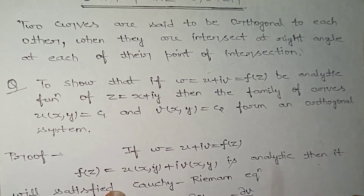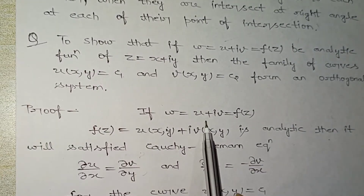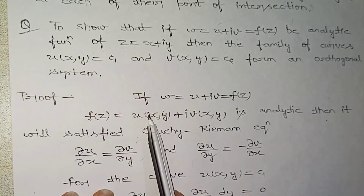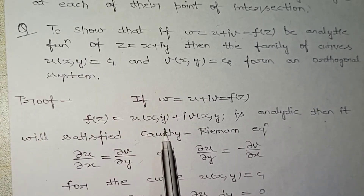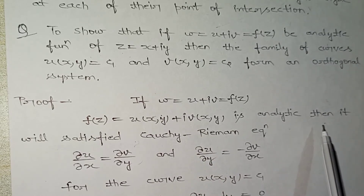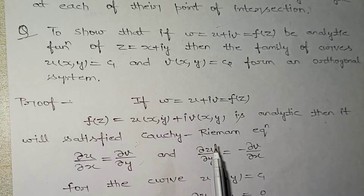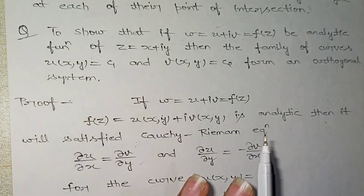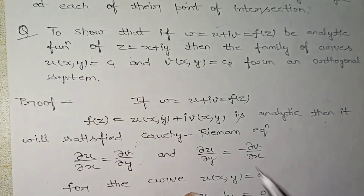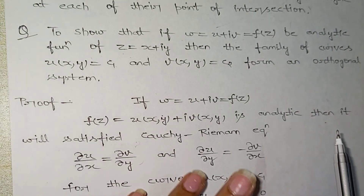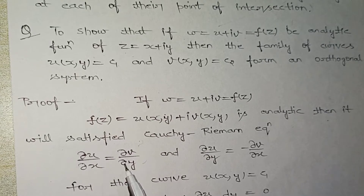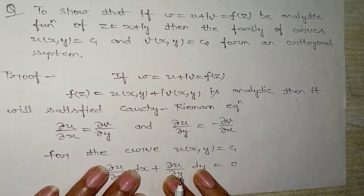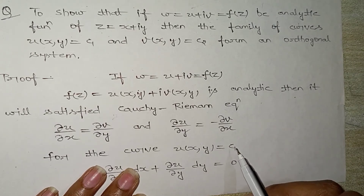The proof is: given that w = u + iv = f(z), then f(z) = u(x,y) + iv is analytic. Then it will satisfy the Cauchy-Riemann equations. If any function is analytic, it will satisfy the Cauchy-Riemann equations. The Cauchy-Riemann equations are: ∂u/∂x = ∂v/∂y, and ∂u/∂y = −∂v/∂x.